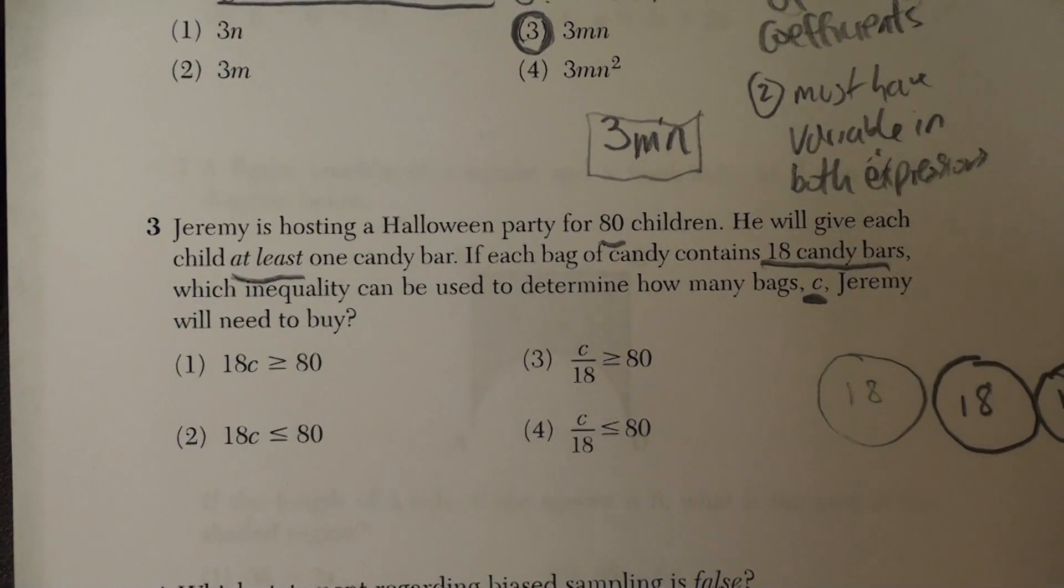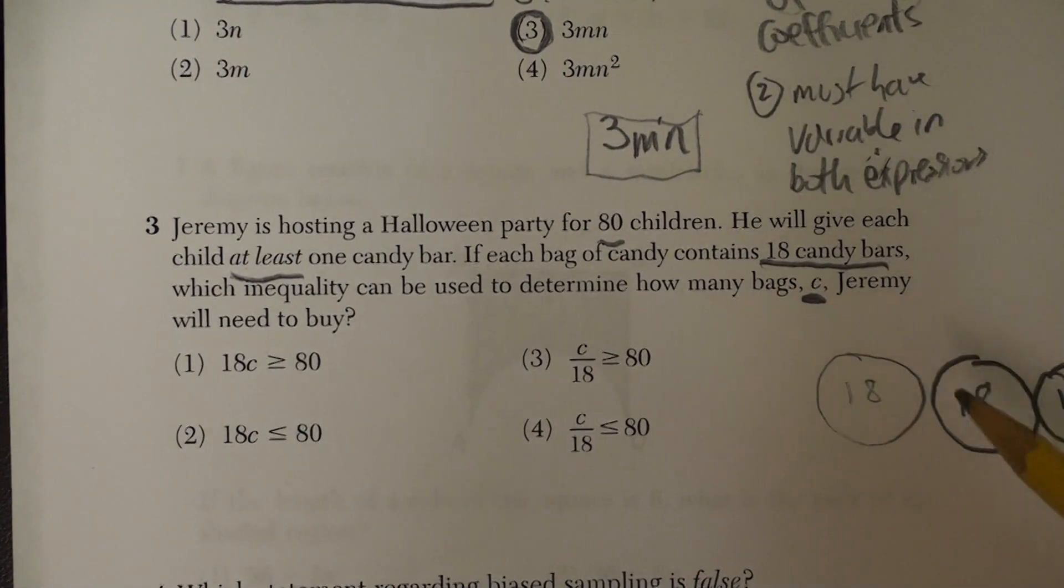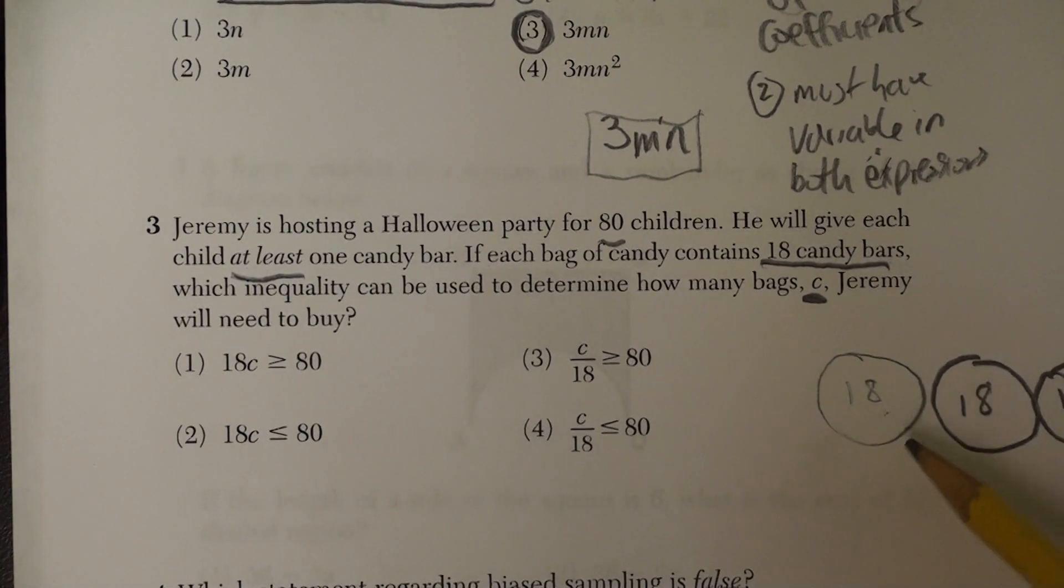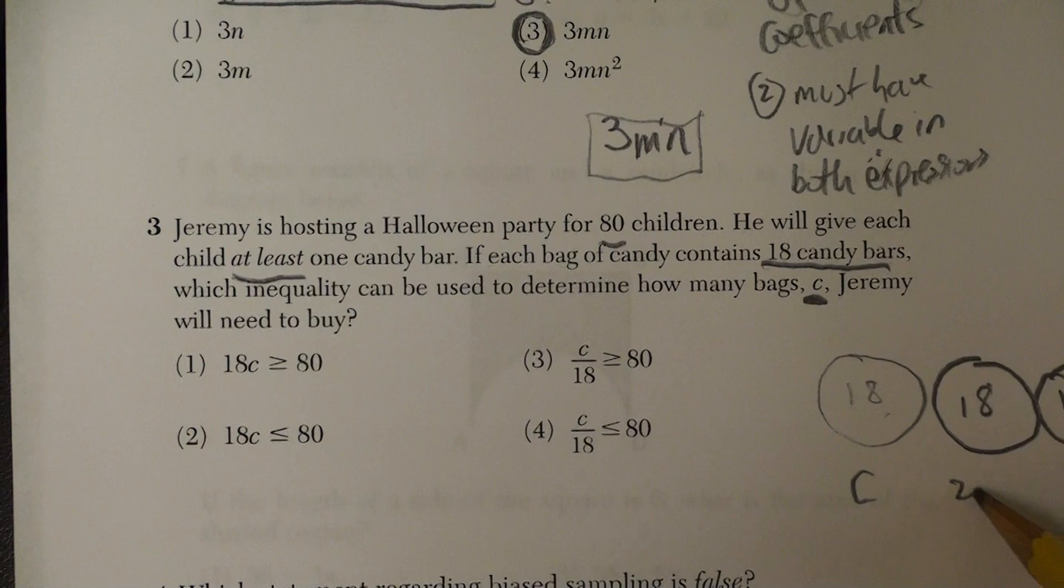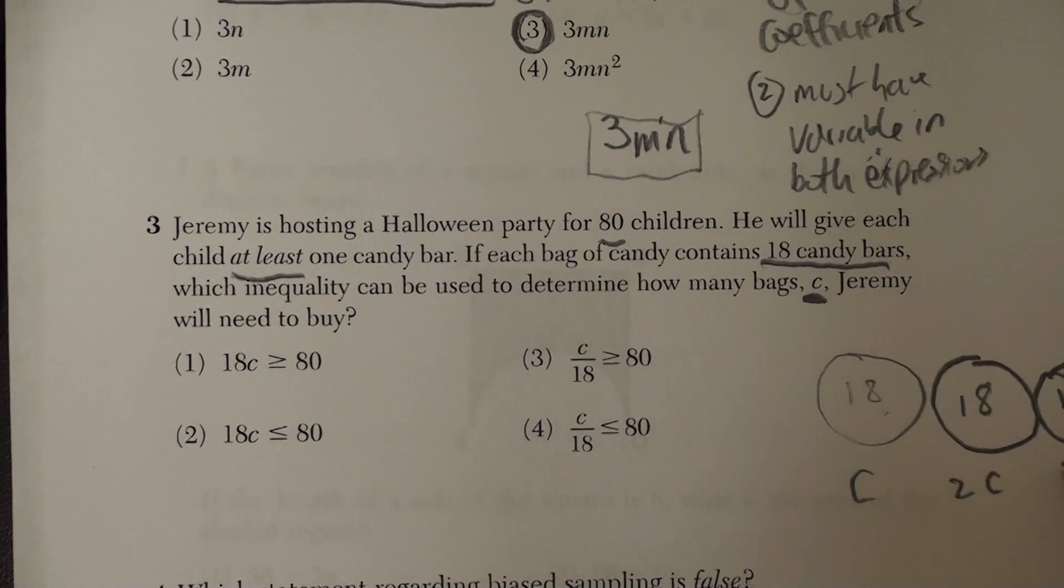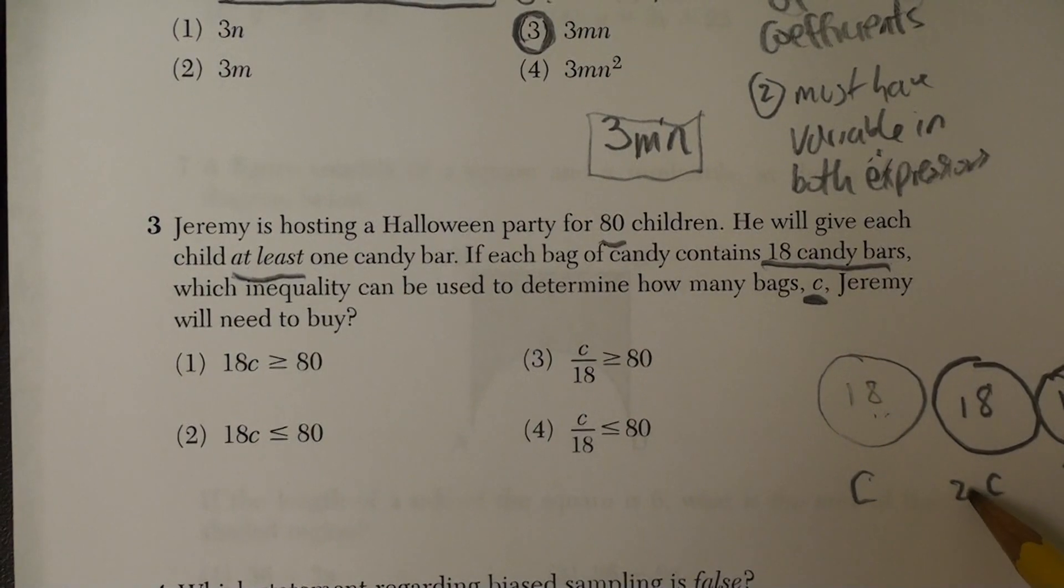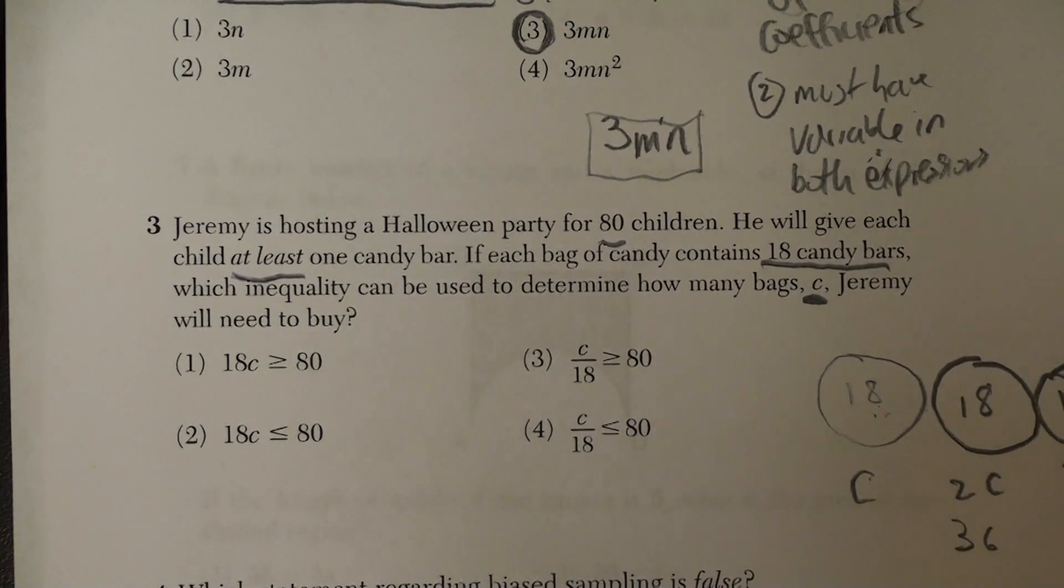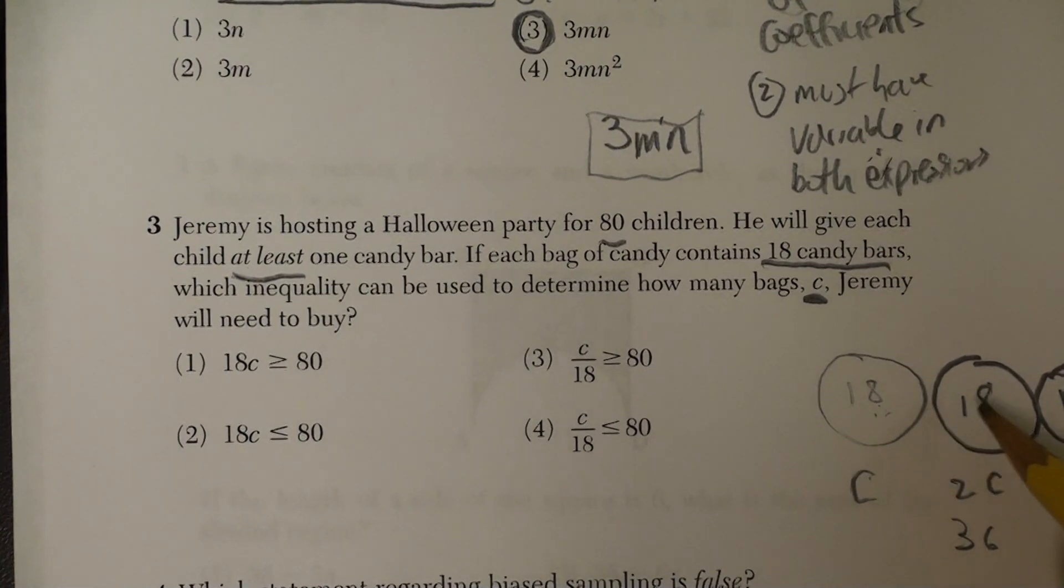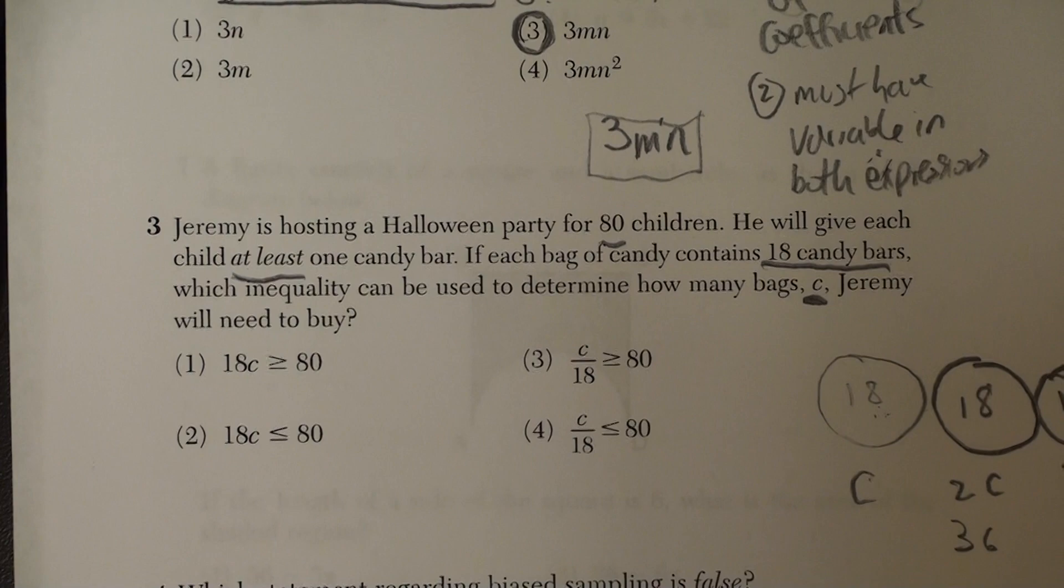I need at least 80 total, so what am I doing here? I'm counting by 18s, or I'm multiplying each bag by 18. This would be C. This would be 2C. This would be 3C. So C would be 18. 2C would be 18 plus 18, or 36. 3C would be 18 plus 18, or 3 times 18, which would be 48.